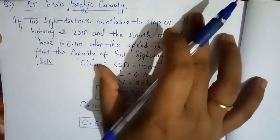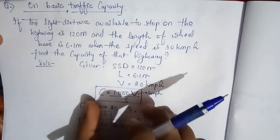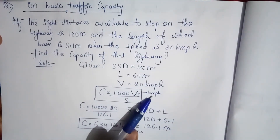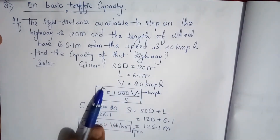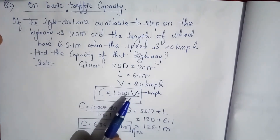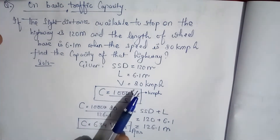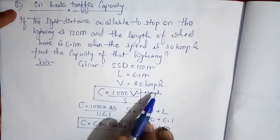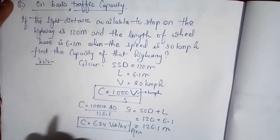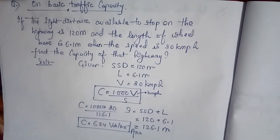So this is how you analyze the given question, extract the given data, recall the formula, and — most importantly — remember which unit of speed to use in the formula. If you don't remember whether speed is in meter per second or kilometer per hour, your answer will be wrong. Always remember the units along with the formula.